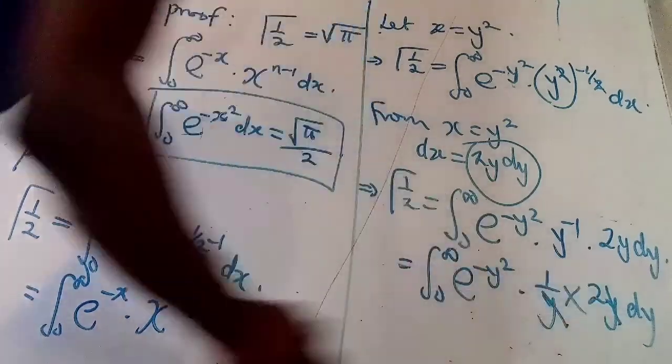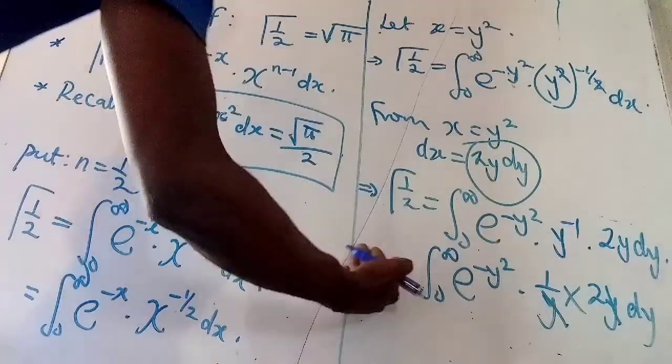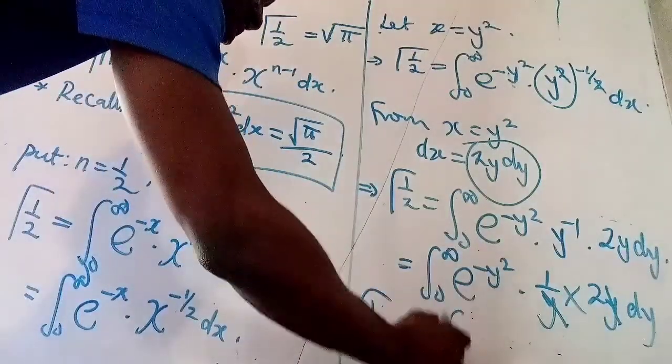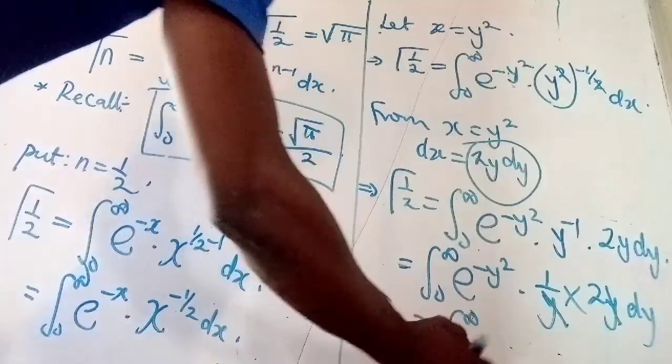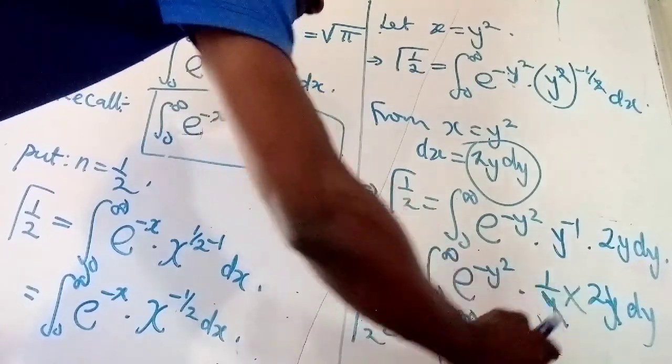So, what I have left is 2 here. So, I will bring the 2 out of the integral. So, gamma of half would be 2 integral 0 to infinity, then e to negative y squared dy.